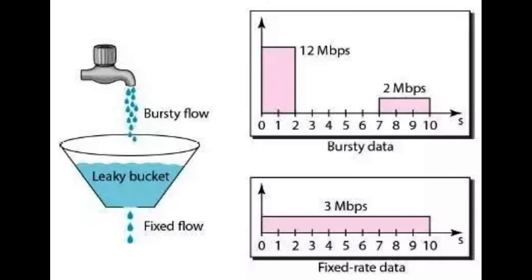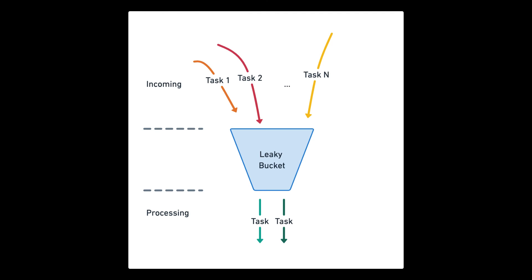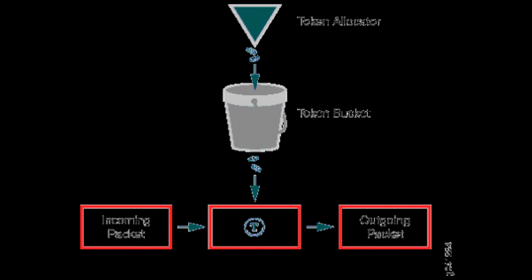The leaky bucket algorithm thus provides a controlled and regulated data flow. It is particularly useful for scenarios where you want to limit the rate of incoming or outgoing traffic to prevent network congestion, ensure fairness among different users or applications, and avoid sudden spikes in traffic that could lead to resource exhaustion.